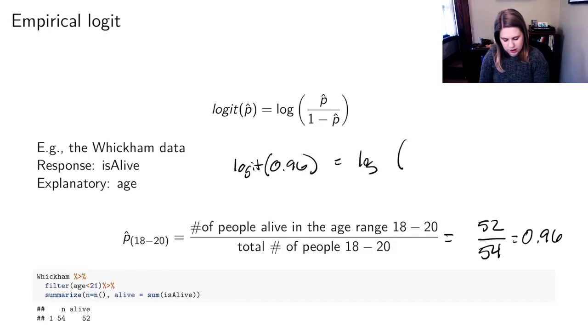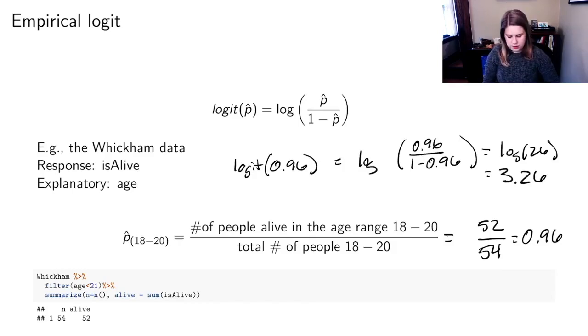So if we were going to find the empirical logit, we find the logit of 0.96, which would be equal to the log of 0.96 over 1 minus 0.96. That's the log of 26, which is 3.26. So that would be my empirical logit for ages 18 to 20.